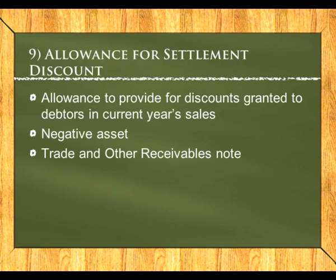The allowance for settlement discount provides for discounts granted to debtors in the current year. It also acts as a negative asset, lowering the debtors control, and affects the trade and other receivables note. To create or increase it: debit settlement discount expense and credit allowance for settlement discount. To decrease it: debit allowance for settlement discount and credit settlement discounts.